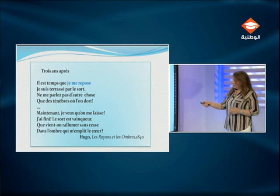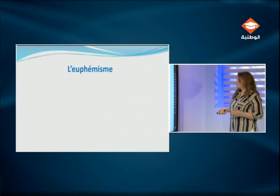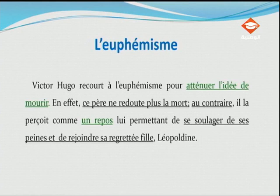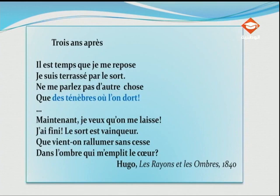Regardons le commentaire. L'euphémisme : Victor Hugo recourt à l'euphémisme pour atténuer l'idée de mourir. En effet, ce père ne redoute plus la mort. Au contraire, il l'aperçoit comme un repos, lui permettant de se soulager de ses peines et de rejoindre sa regrettée fille Léopoldine.